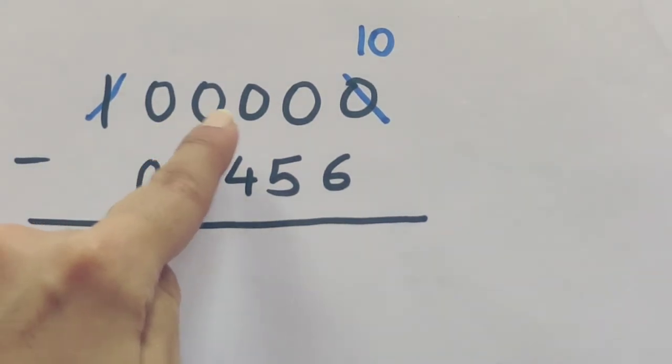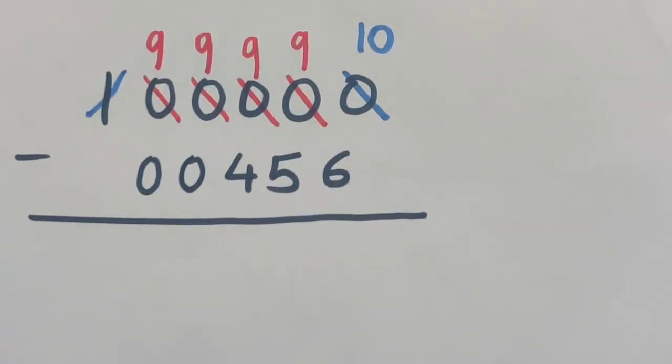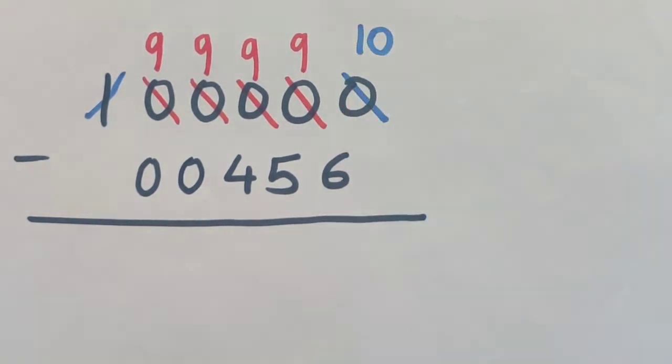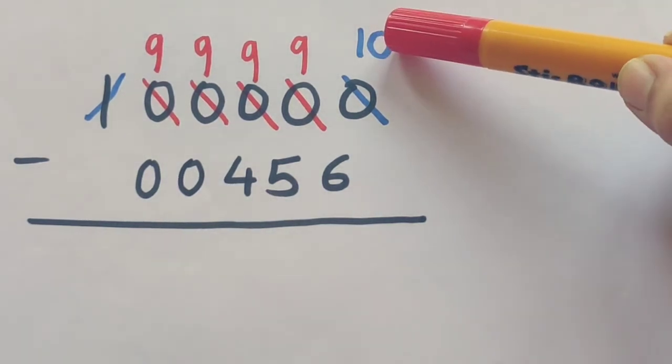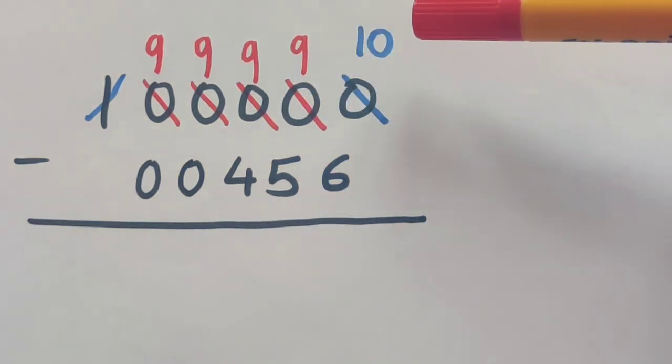Now we are left with four remaining zeros. Simply cancel each of the zeros and make them nine. The one on the left hand side was cut and the right hand side zero was cut and made ten, so remaining zeros will become nine due to the borrowing step.